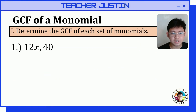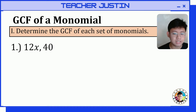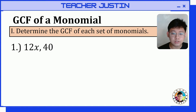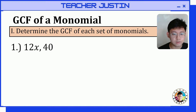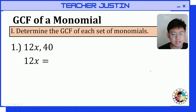Let's determine the greatest common factor of each set of monomials. For our first item, we have 12x and 40. In order to get the greatest common factor of monomials, we have to apply prime factorization. So let's get the prime factors of 12x and 40.